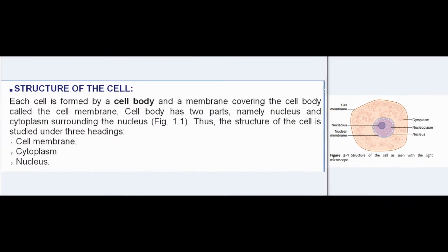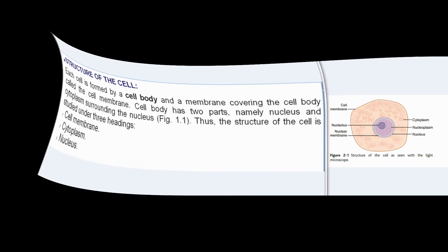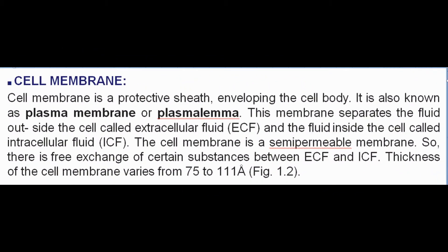Each cell is formed by a cell body and a membrane covering the cell body called the cell membrane. Cell body has two parts, namely nucleus and cytoplasm surrounding the nucleus. Thus, the structure of the cell is studied under three headings: cell membrane, cytoplasm, and nucleus.